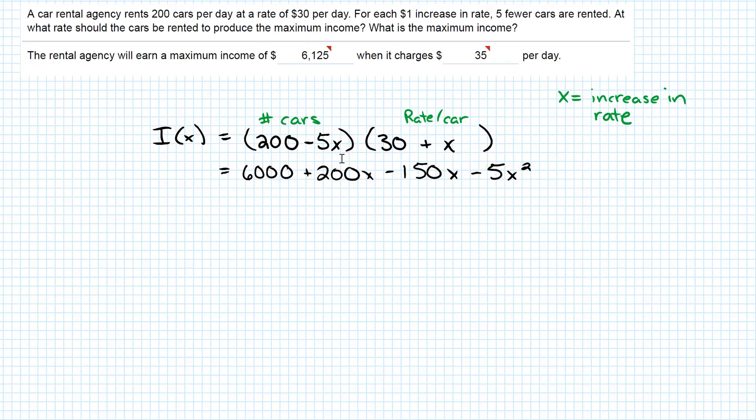Depending on the version of your problem, it might be negative 10. Make sure it's negative 10X squared when you get your answer. You don't want to miss it because you forgot that. Let's collect like terms. That's going to give me 6,000 plus 50X minus 5X squared. That looks like something I wouldn't mind taking a derivative of.